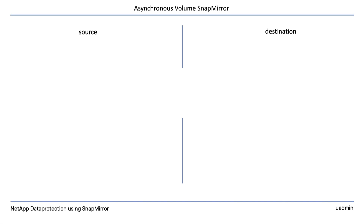Before we go in and set up SnapMirror relationships of all sorts, it's very important that we first have a look at the key elements that can make up a SnapMirror relationship. We will first concentrate on asynchronous relationships between individual volumes.